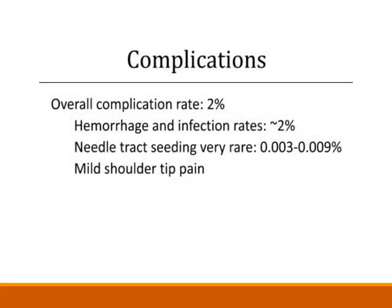As we follow this patient, we're going to want to be aware of the complications from this procedure. Overall, it's a very safe and effective procedure with a complication rate of less than 2%. The most common complications are hemorrhage and infection, at rates of around 2%. There is also needle track seeding from cancer, which is very rare, and patients could also complain of mild shoulder tip pain.